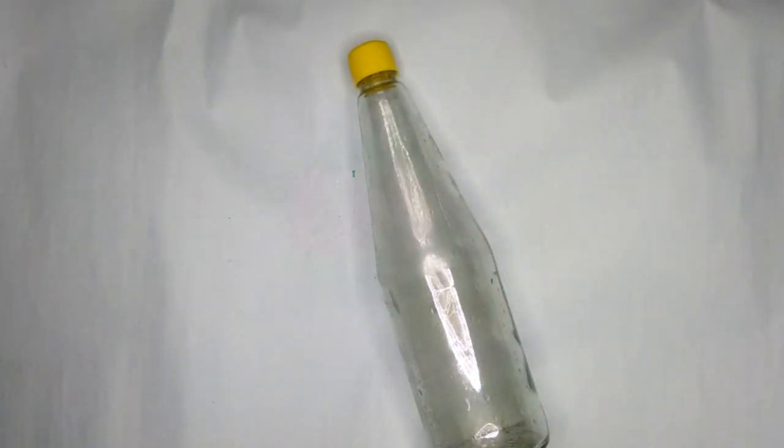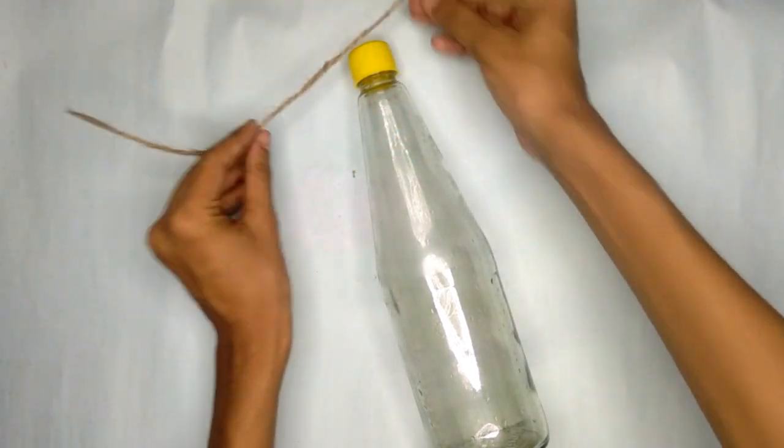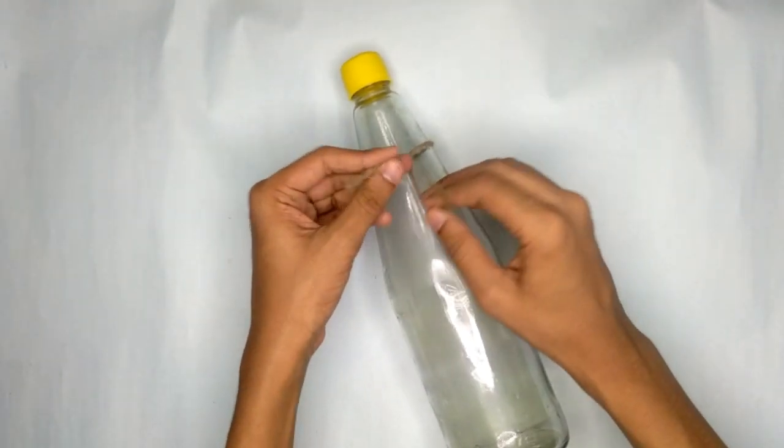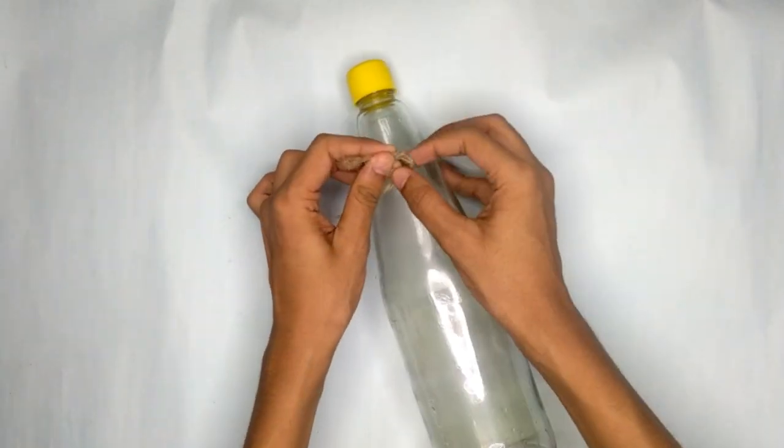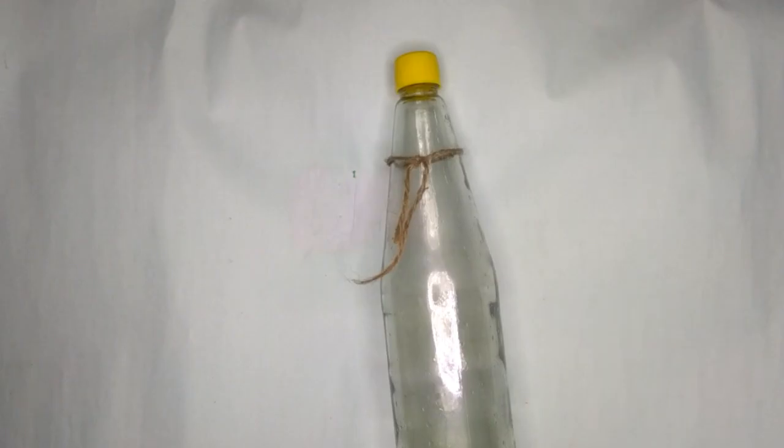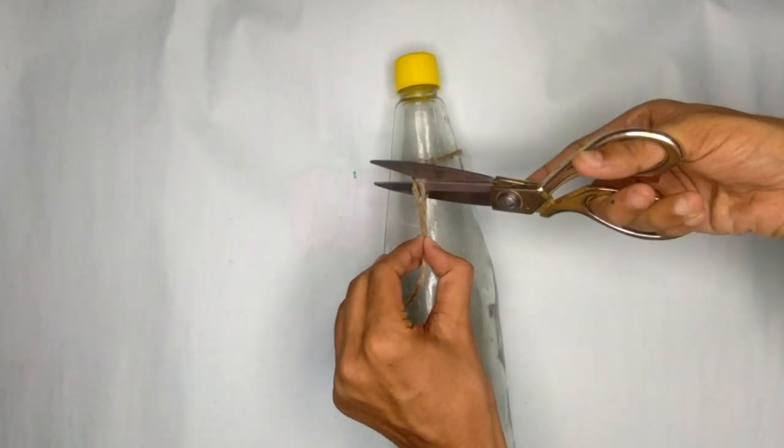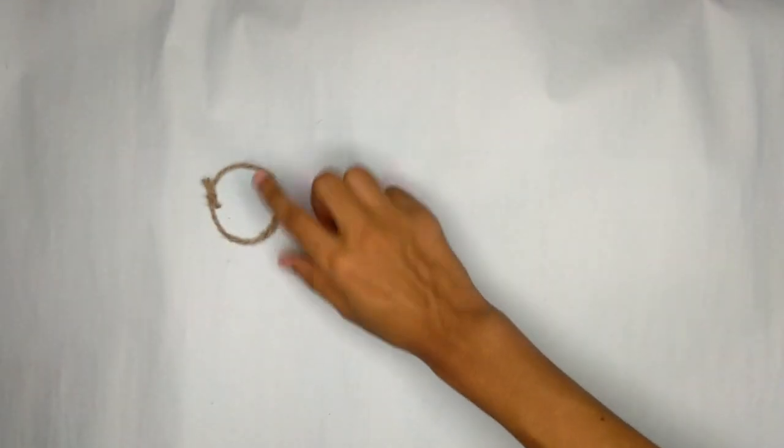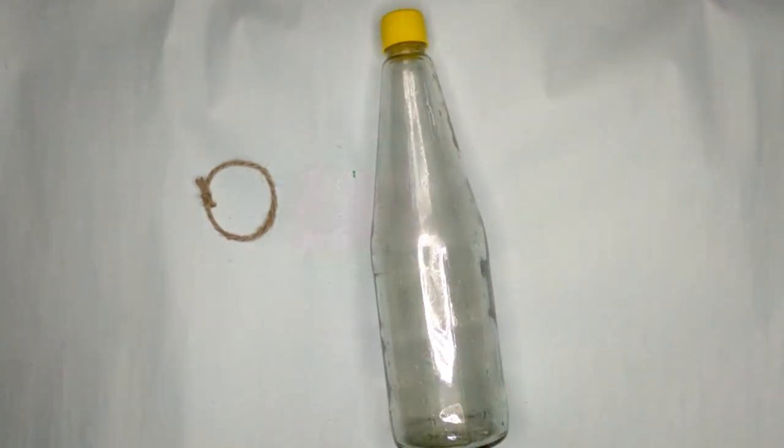The first step: we are going to take a piece of thread and make a loop. So the loop is now ready. Keep it aside and now we are going to prepare the threads for knotting.